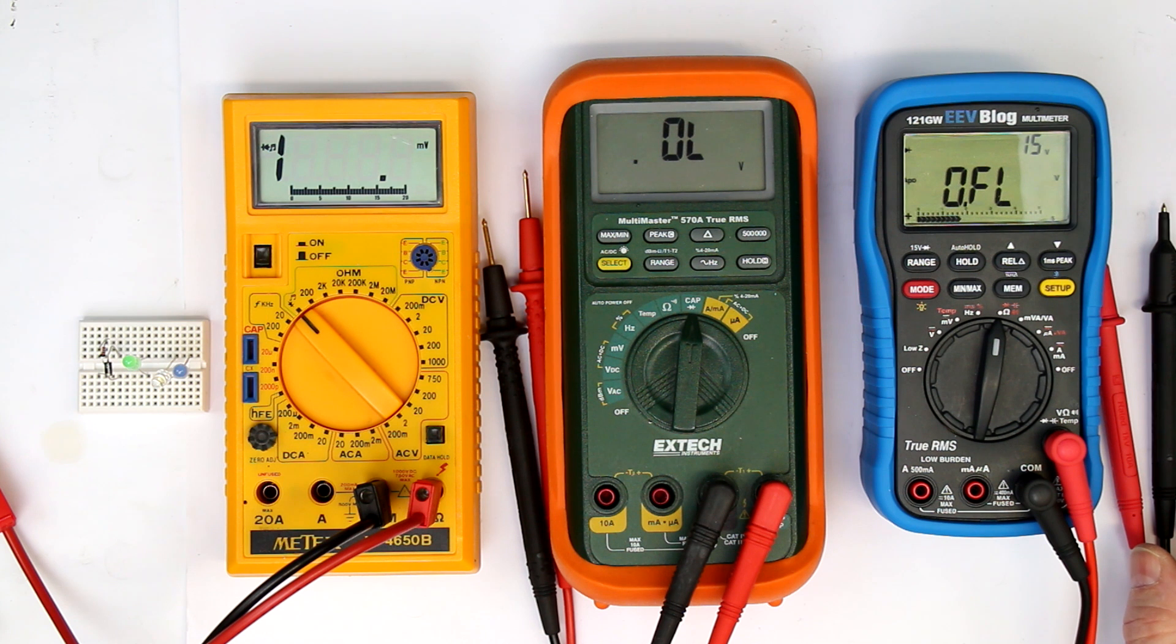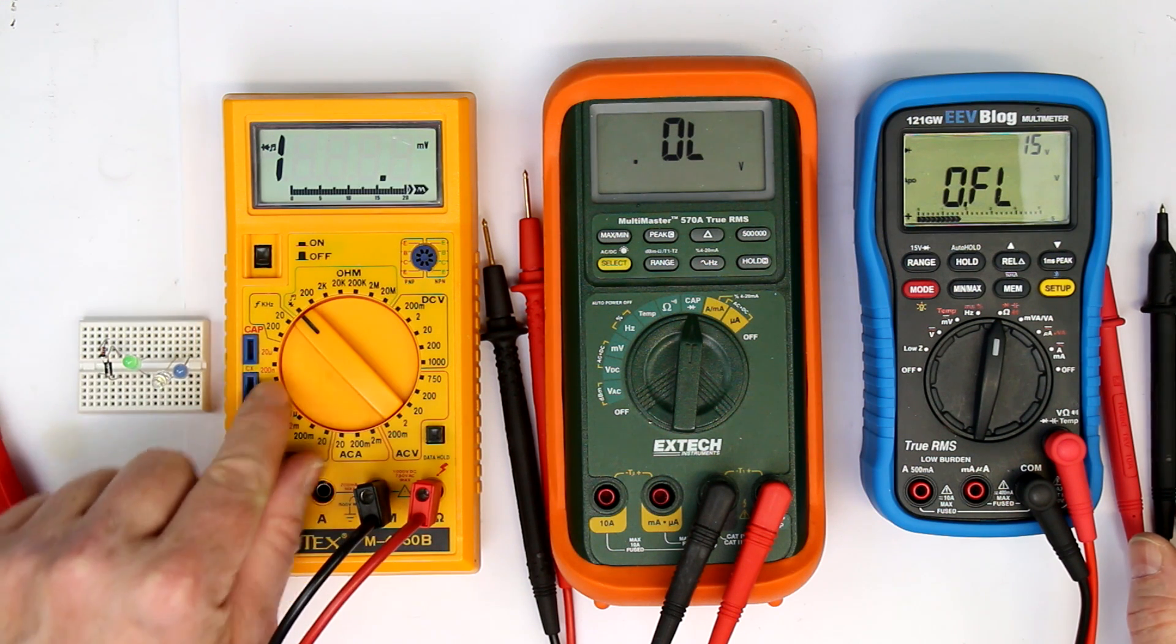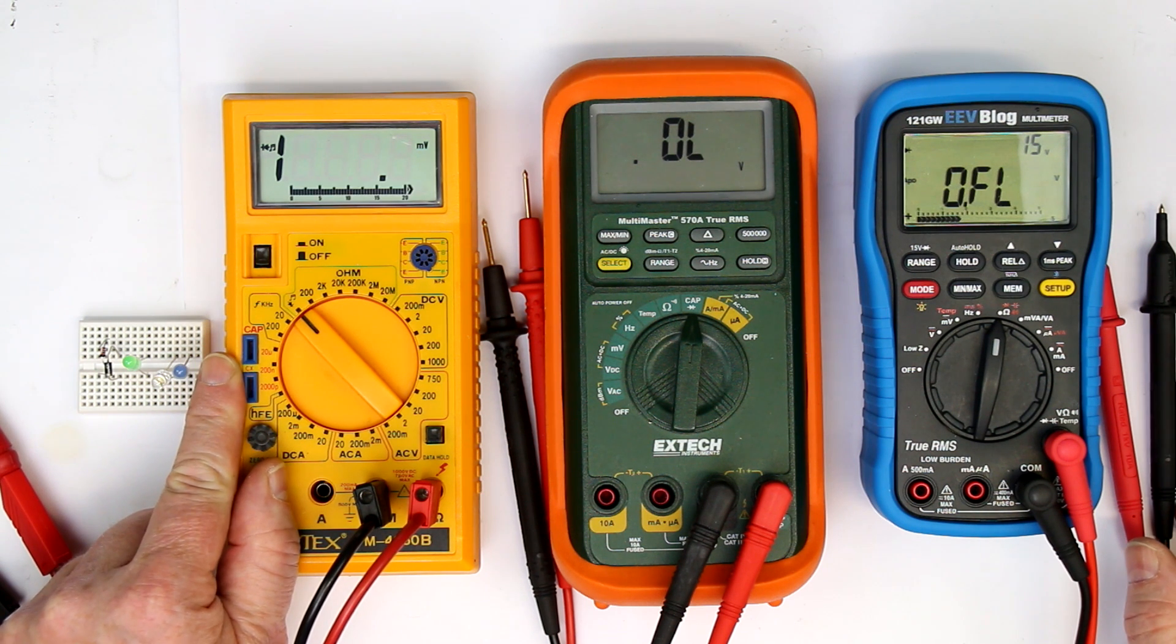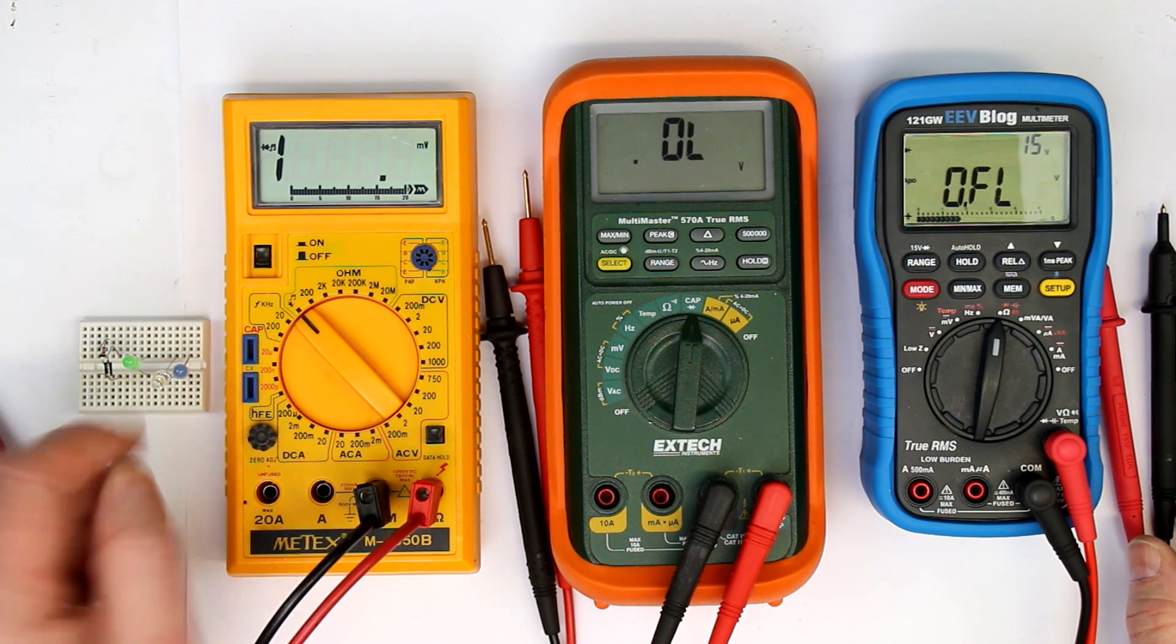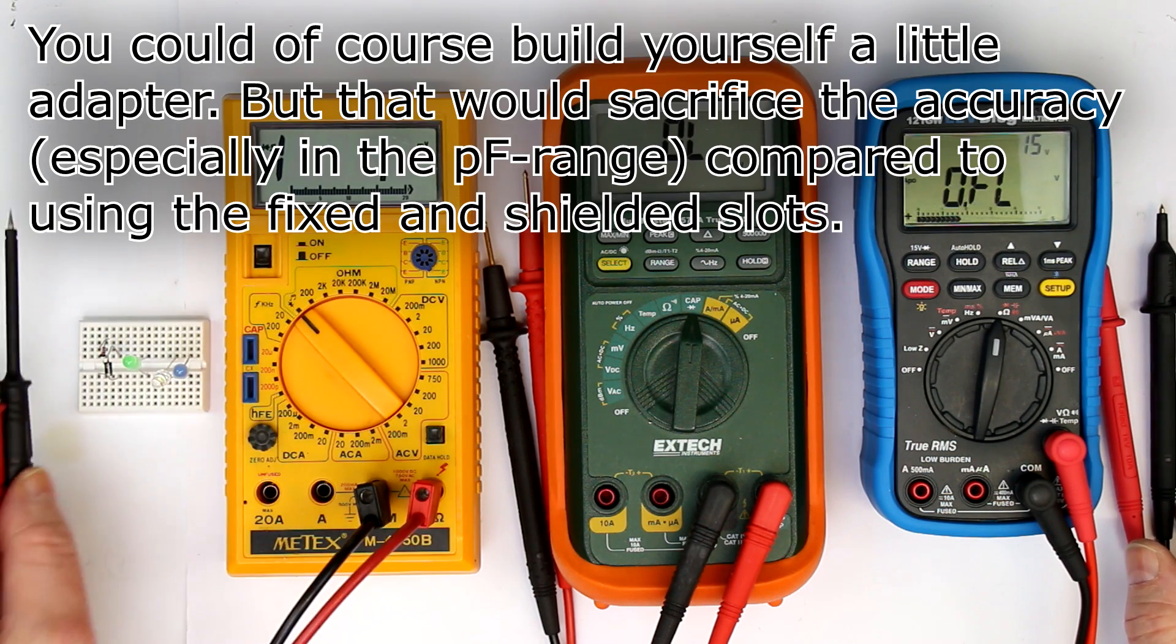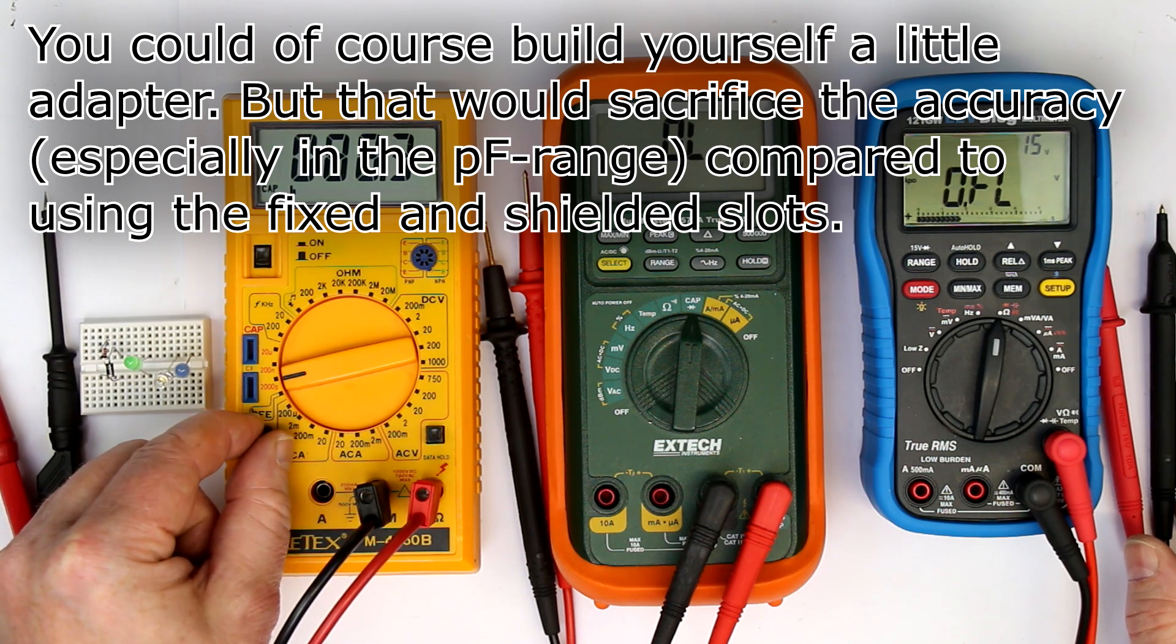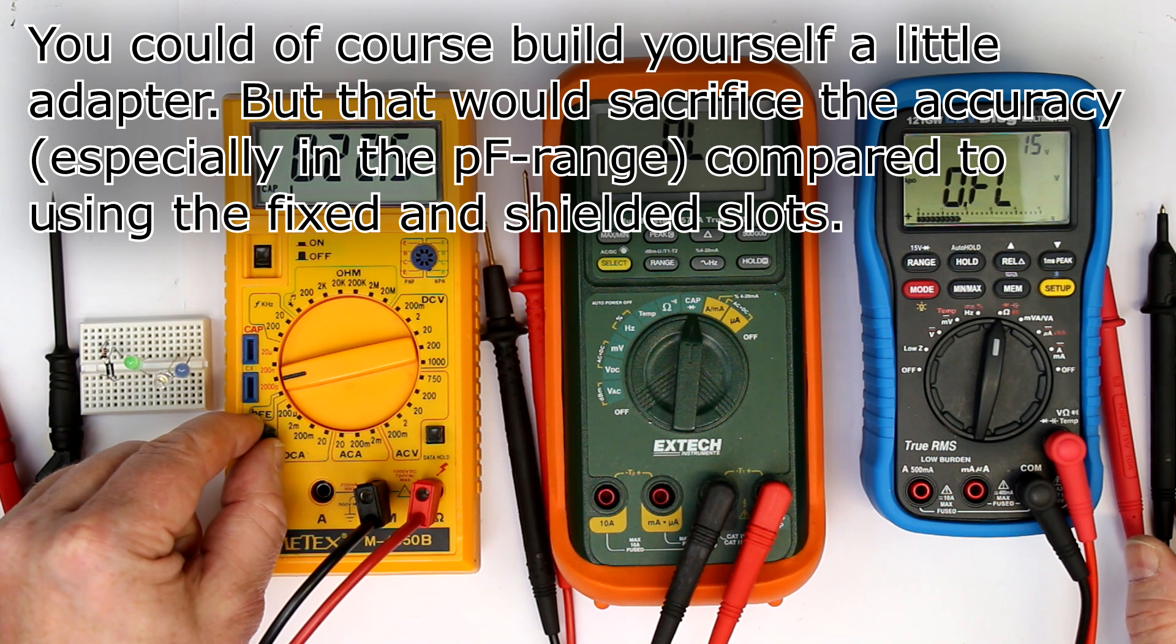And the final component that we can test with these are, of course, capacitors. Now, the good old Mitex, it was just a very new and rarely found feature in multimeters of that decade that you had a capacity measurement. The downside was you had to use these two terminals. So, you could not use your normal test leads or test grabbers. And you had to zero, or you have to zero out, the parasitic resistance with this little potentiometer here.